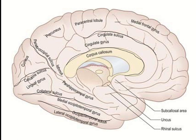This gyrus is named the medial frontal gyrus. This is the paracentral lobule. The part of the central sulcus present here, and part of the postcentral sulcus and precentral sulcus — so this area is known as the paracentral lobule.